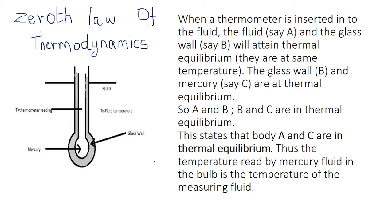To understand the basic working principle of a thermometer, we should know a special law called the Zeroth Law of Thermodynamics. This is not in your book, but it is an important concept. When a thermometer is inserted in a fluid, let us label that fluid as A, the bulb of the thermometer as B, and the mercury inside the bulb as C. So A is the liquid, B is the glass, and C is the mercury.